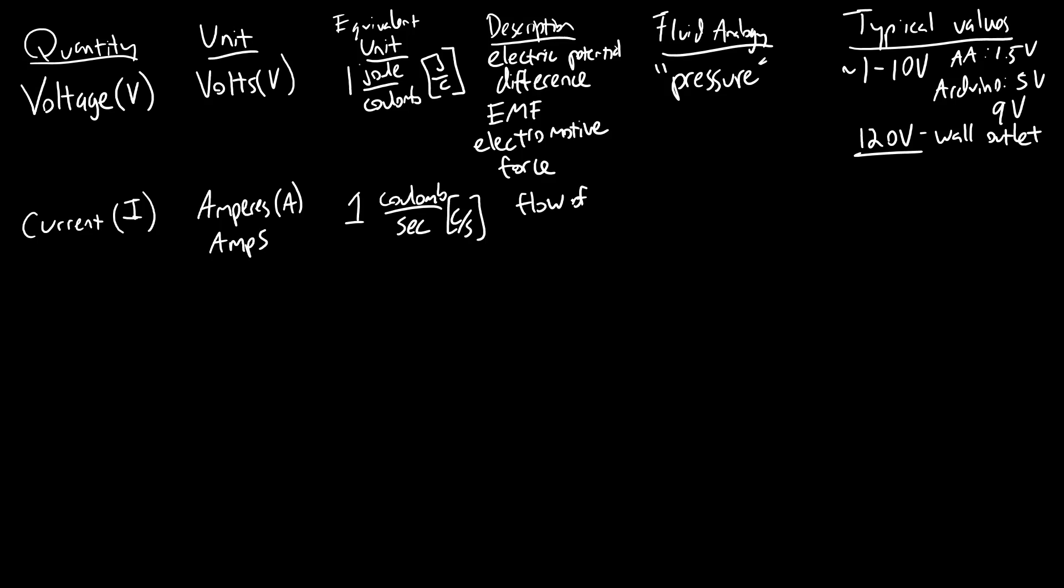And the description: this is the flow of charge. So coulombs are the unit of electrical charge that, again, you will encounter more in a physics course, not as much in an electronics course. But coulombs per second gives you a flow rate. So the fluid analogy here is the flow of water, except in this case, we're talking about flow of electrical current, which is positive or negative charges.